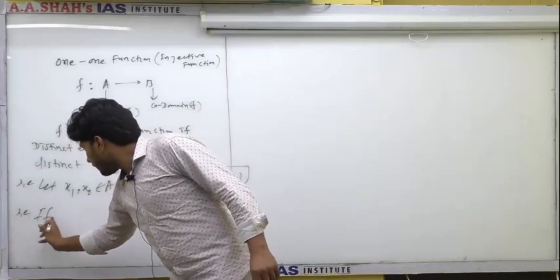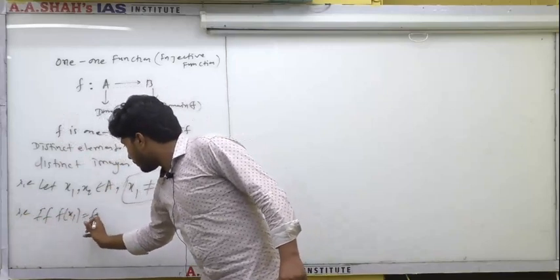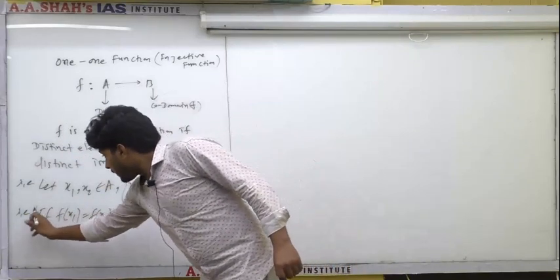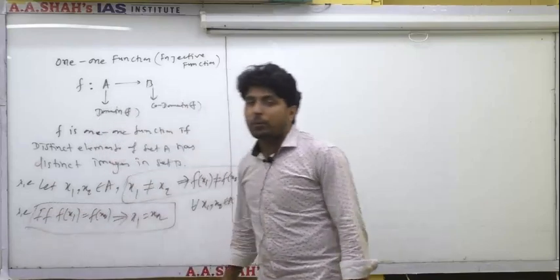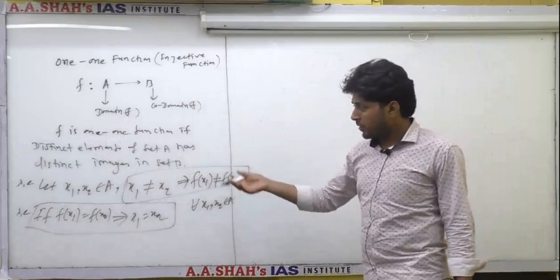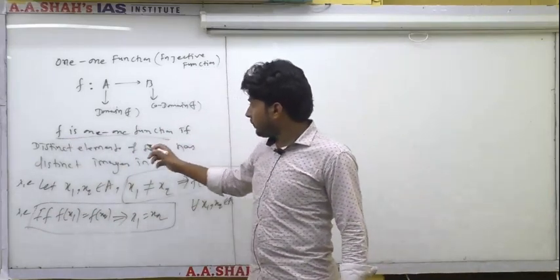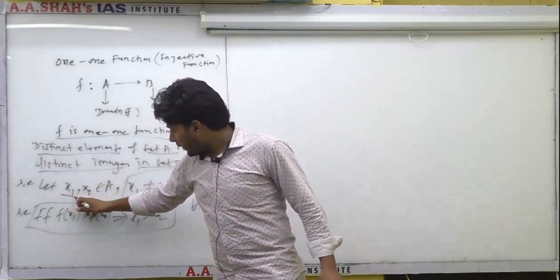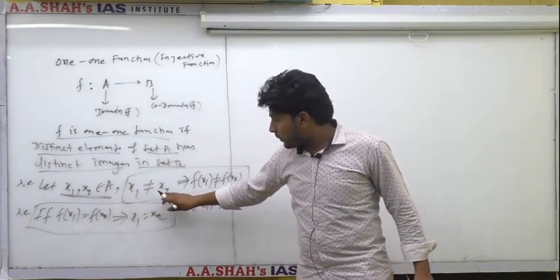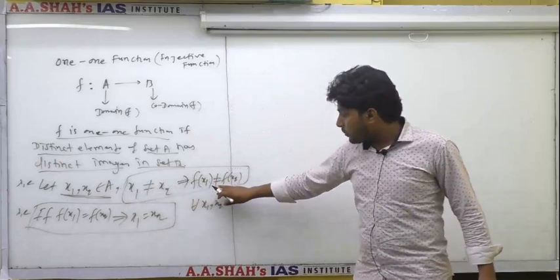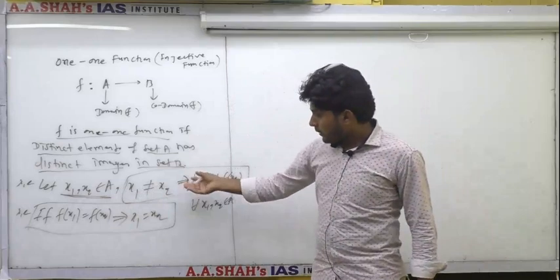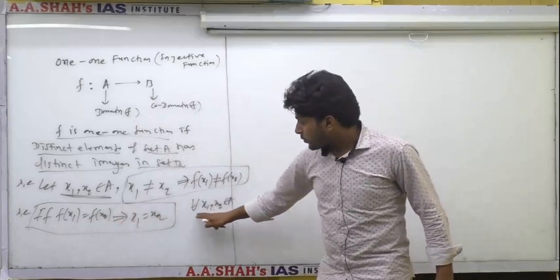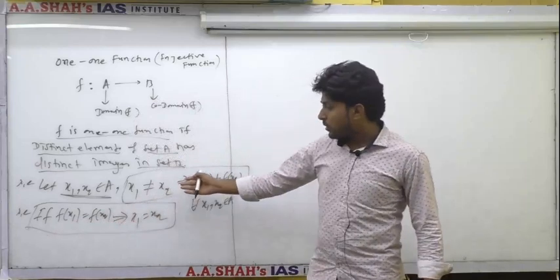We have three different ways. f is a one-one function if distinct elements of set A have distinct images in set B. That is, if x1, x2 are in set A and x1 ≠ x2, then f(x1) ≠ f(x2). The same statement can be stated differently: if f(x1) = f(x2), then x1 must equal x2, for all x1, x2 in A. These two statements are contrapositives of each other.